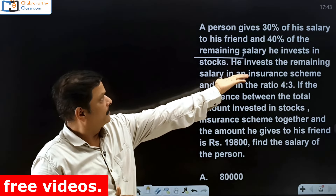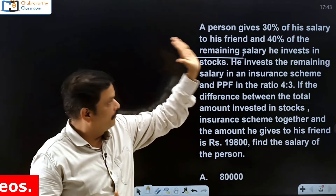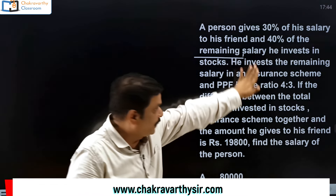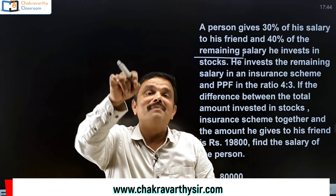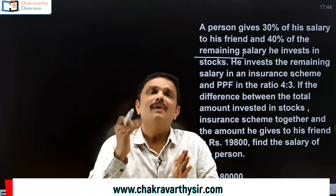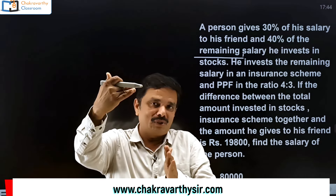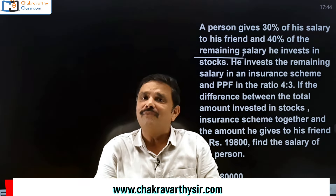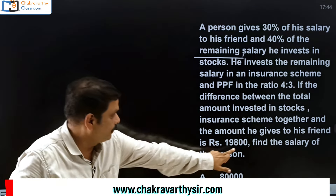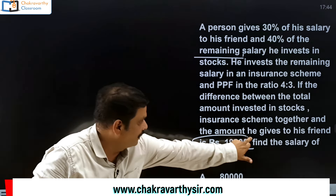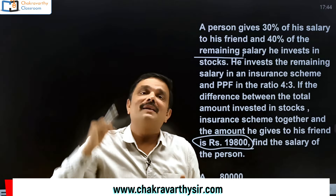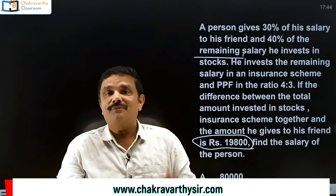What are the conditions? 30% to his friend, then 40% of the remaining in stocks, again the remaining — whatever it may be. You go with these conditions using your imaginary number. Finally you will arrive at a conclusion in the form of a number. After taking the imaginary number and going with the conditions, you will get one imaginary figure. That resultant imaginary figure must be compared with the actual figure given in the question. After comparison, directly you can go to the answer. This is the basic of unitary method.